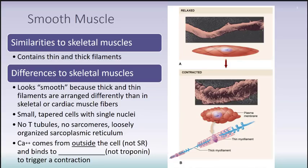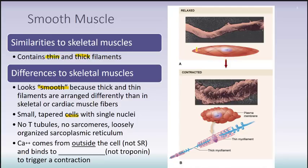The third type of muscle is smooth muscle. Smooth muscle tissue also contains thick and thin filaments, but some key differences exist. It looks smooth — hence the name — because the thick and thin filaments are arranged differently than in skeletal or cardiac muscle fibers, which give those a striated appearance. Smooth muscle cells look elongated and narrow with a single nucleus and tapered ends.